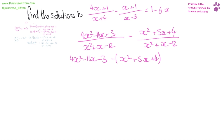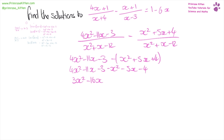Now, because these are minuses, this becomes four x squared minus 11x minus three, minus x squared minus five x minus four, giving us three x squared minus six x minus seven.